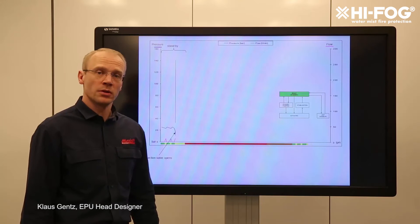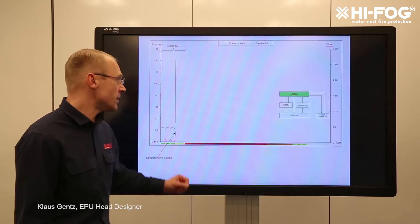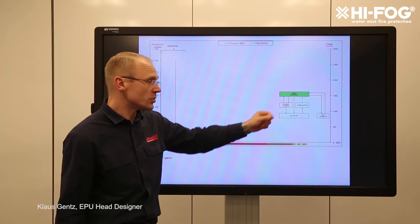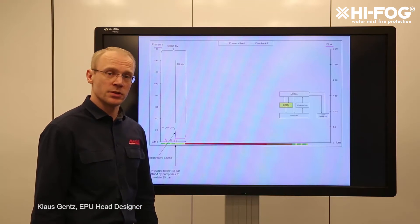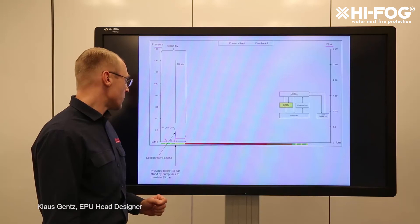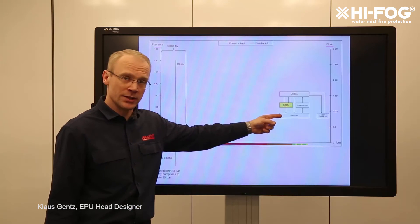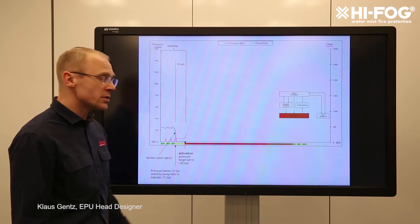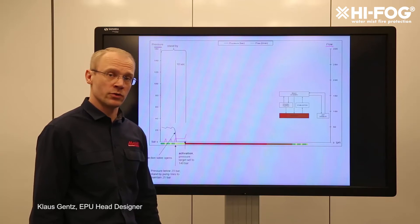In this example we open the section valve and once the pressure goes below 23 bars the system will go from ready state to standby pumping. At the same time there's a 10 second timer and when that timer is down to zero the system will go from standby pumping to activated and at the same time the pressure target will be elevated from 25 bars up to 140 bars.